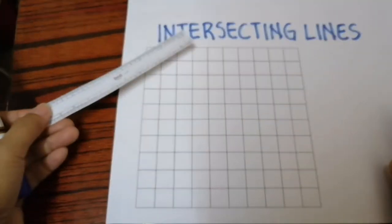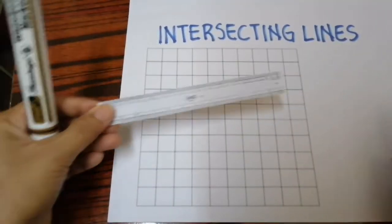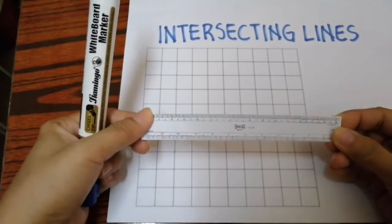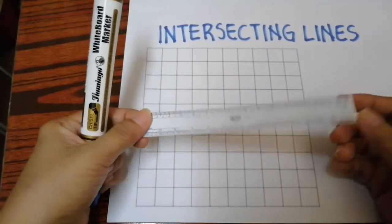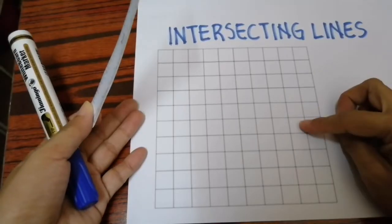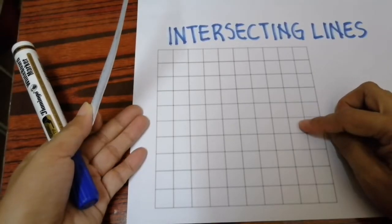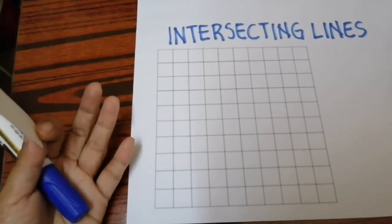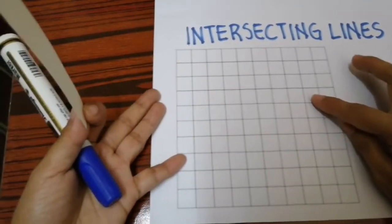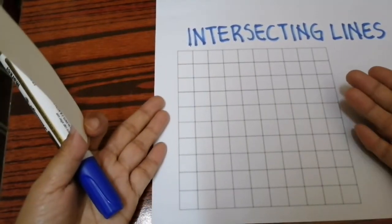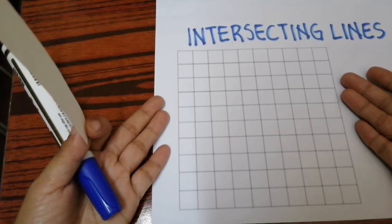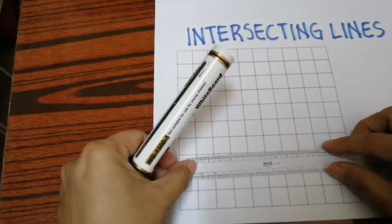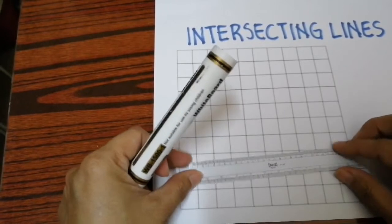Let's start by creating our own intersecting lines. First we need a ruler — this is just an improvised one — and this is what we call a hundred-square grid paper. But if you don't have one, that's fine. This will be our guide to create our own intersecting lines.